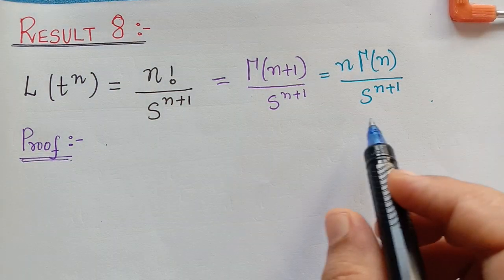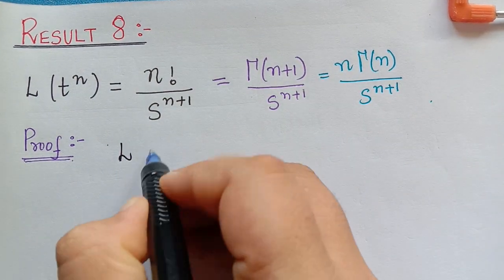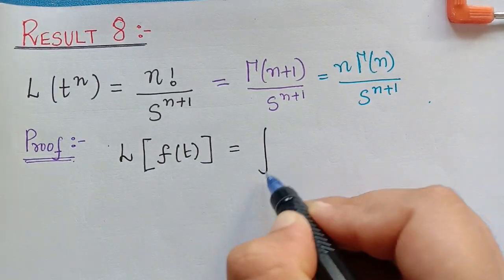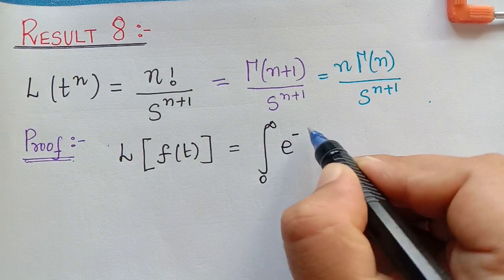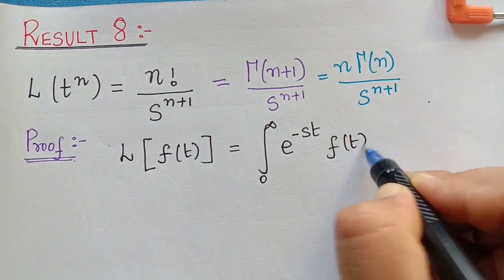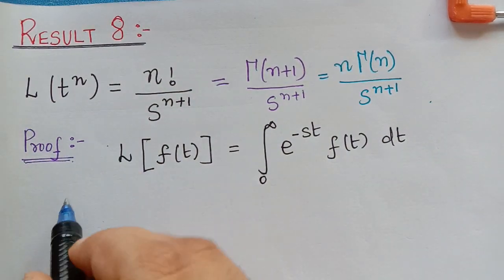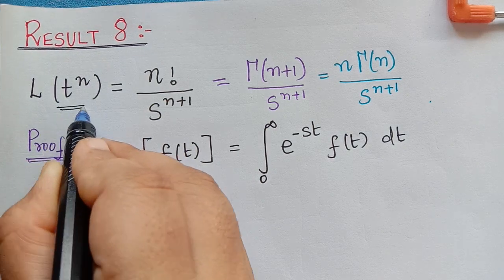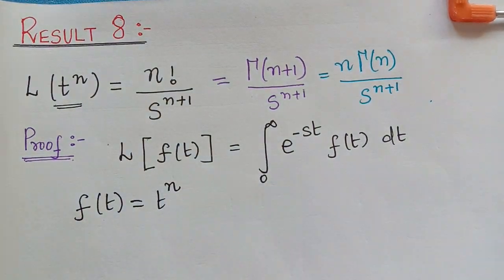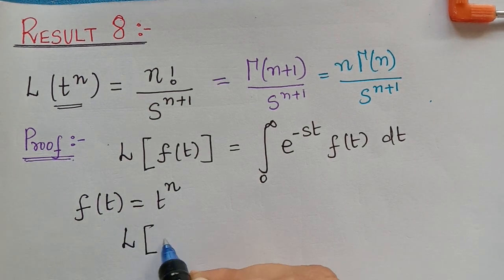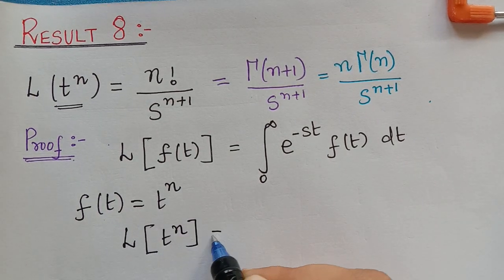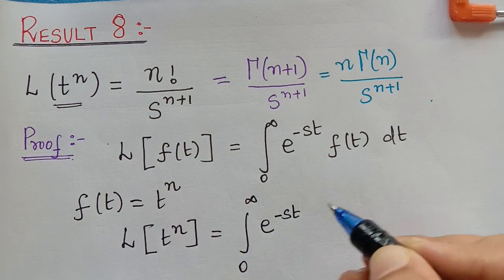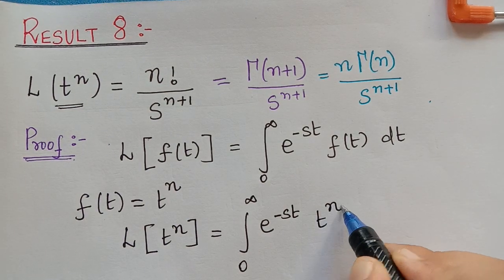In order to prove this, as the first step we shall write the general formula for Laplace transform, which is given by L of f of t equal to the integral from 0 to infinity of e to the power negative st times f of t dt. In our question the given function f of t is equal to t to the power n, so let us substitute that.